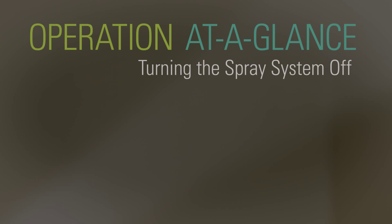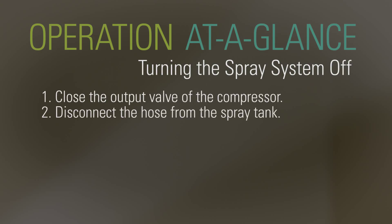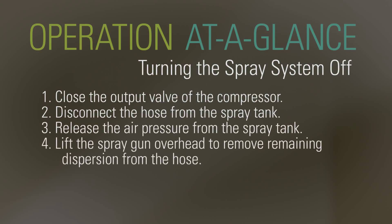Turning the spray system off. Close the output valve of the compressor. Disconnect the hose from the spray tank. Release the air pressure from the spray tank. Lift the spray gun overhead to remove remaining dispersion from the hose. Close the main valve.